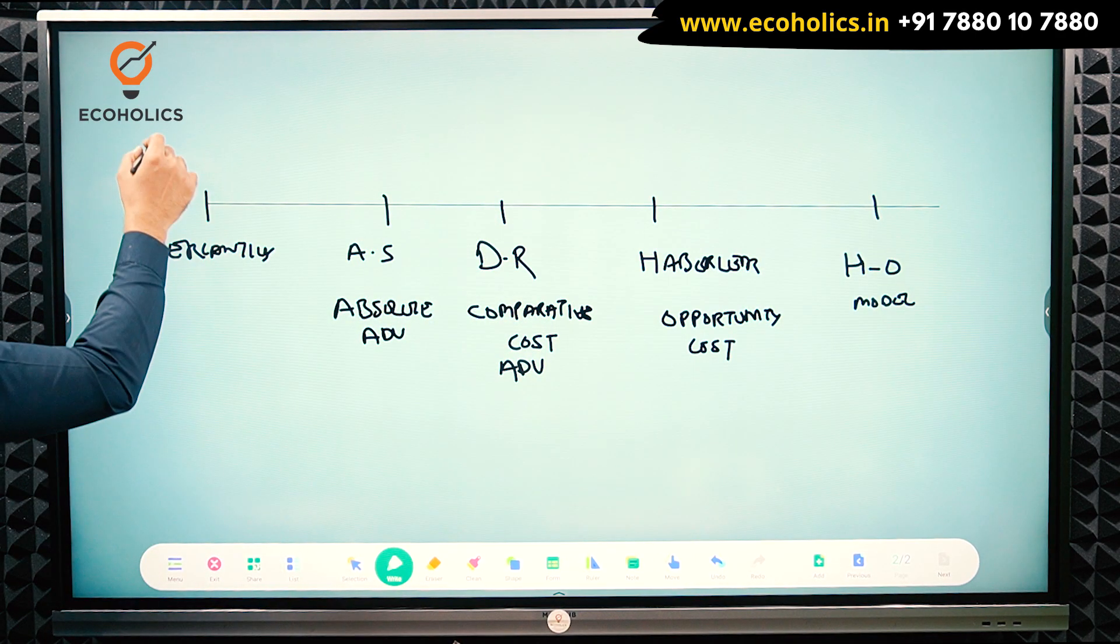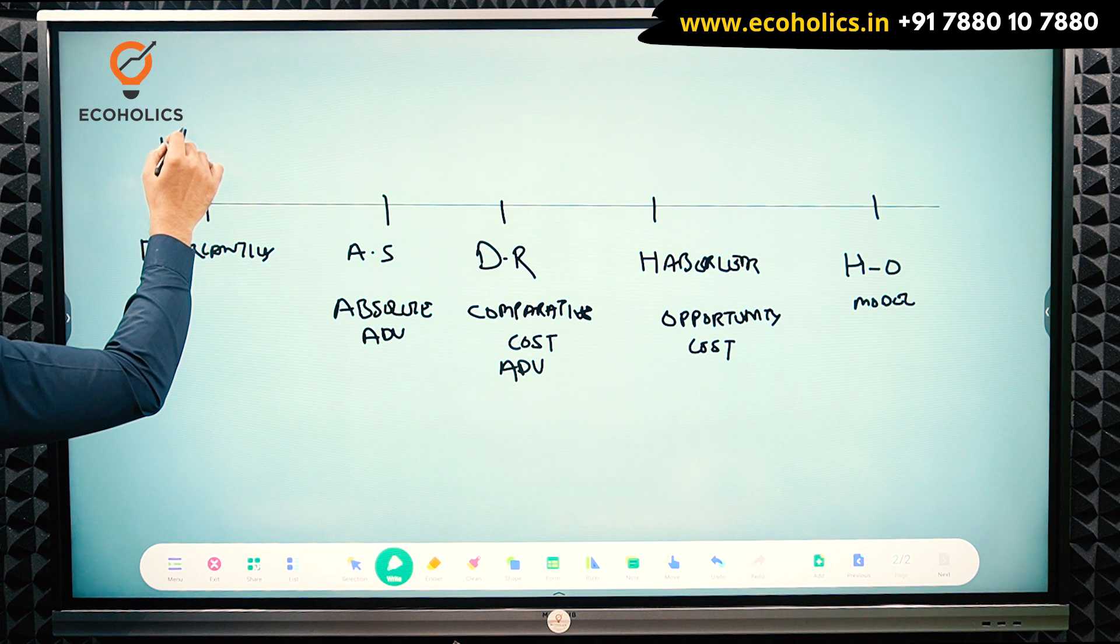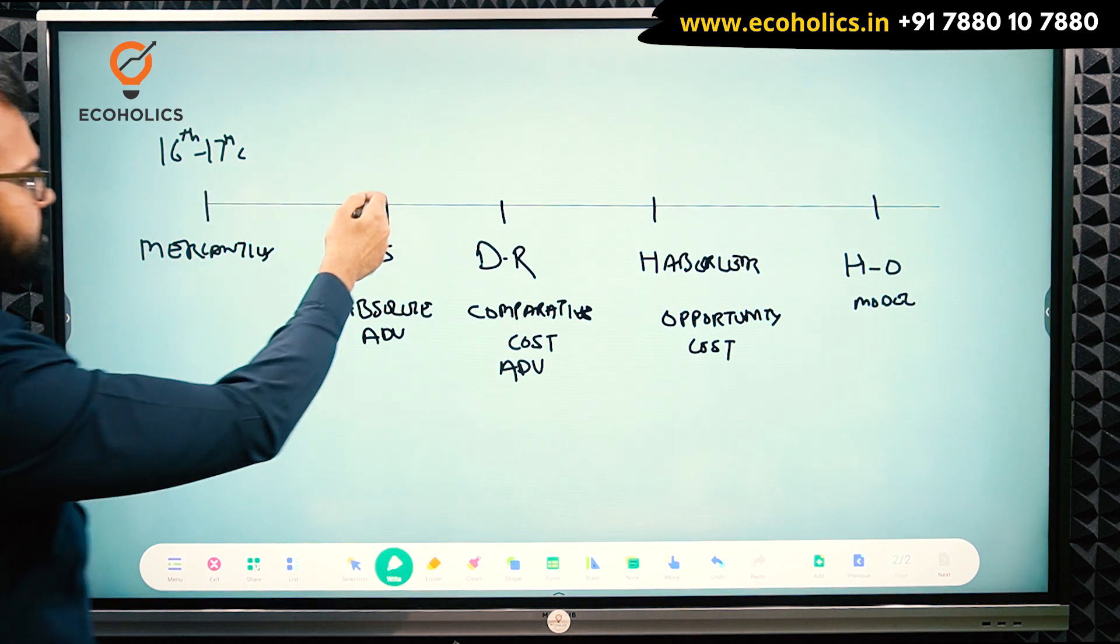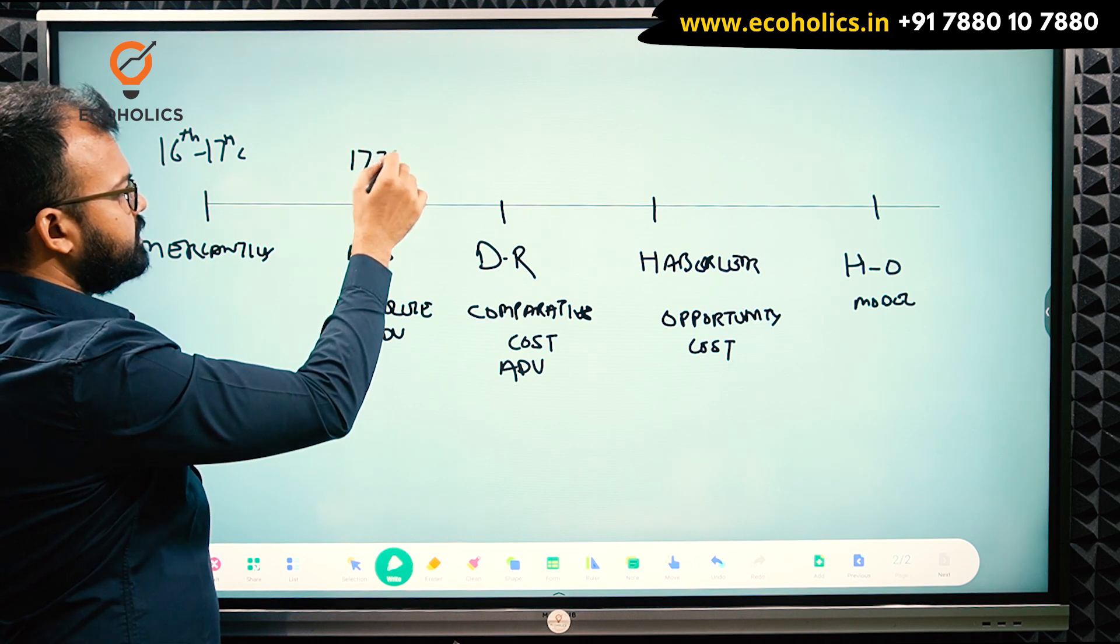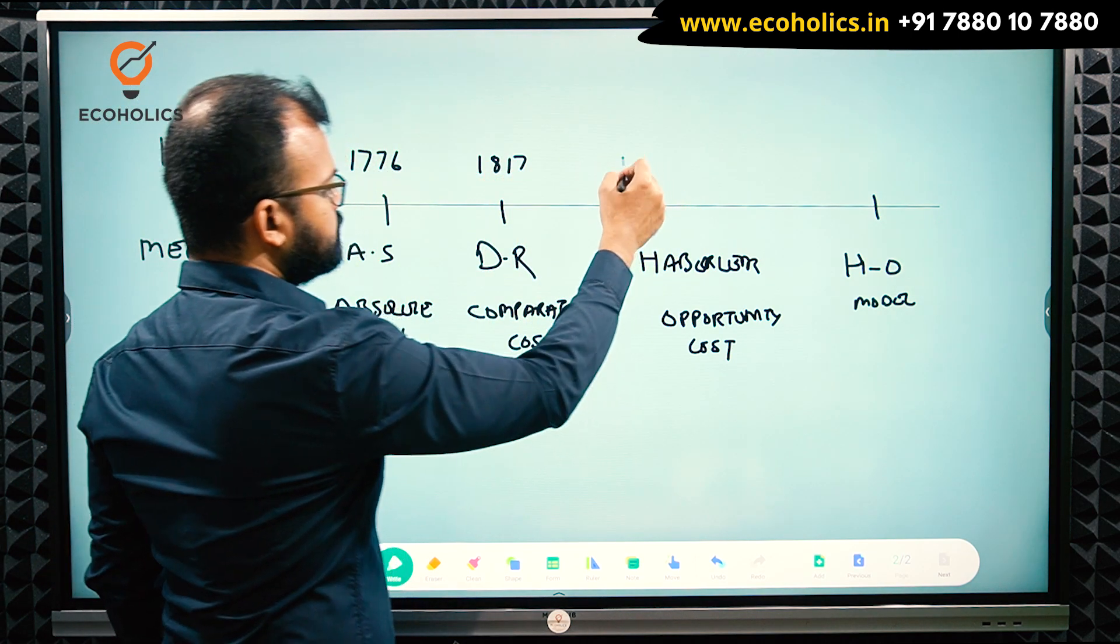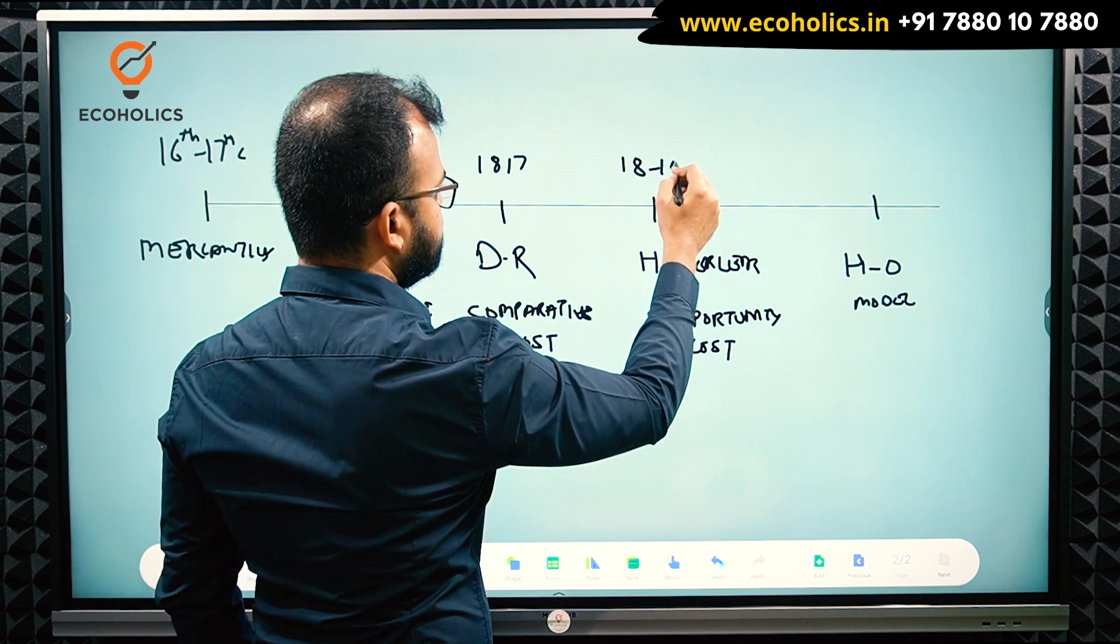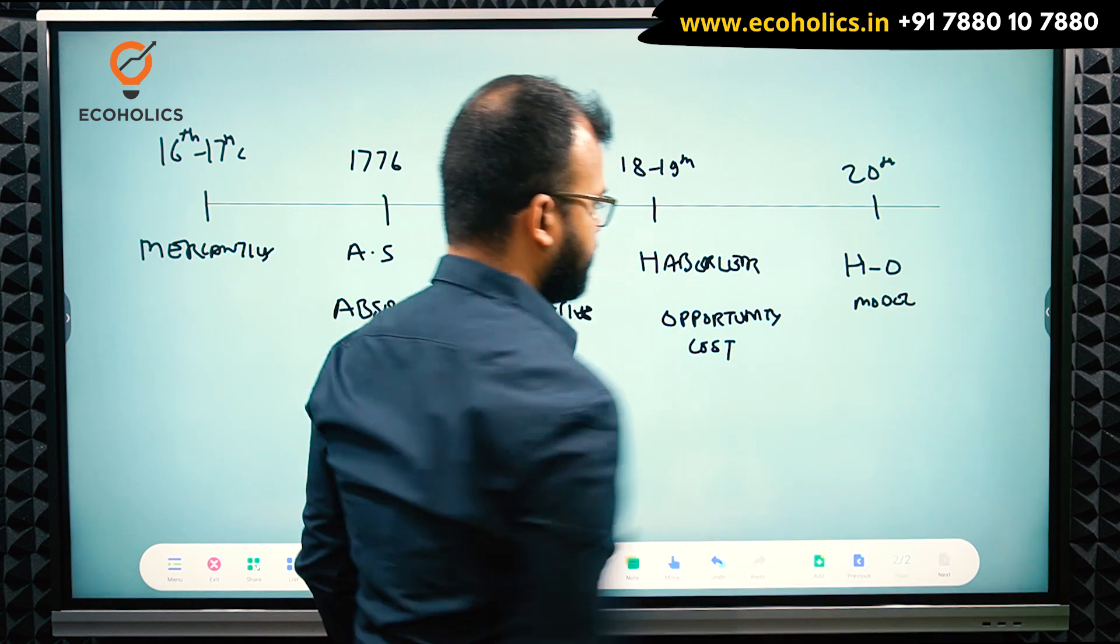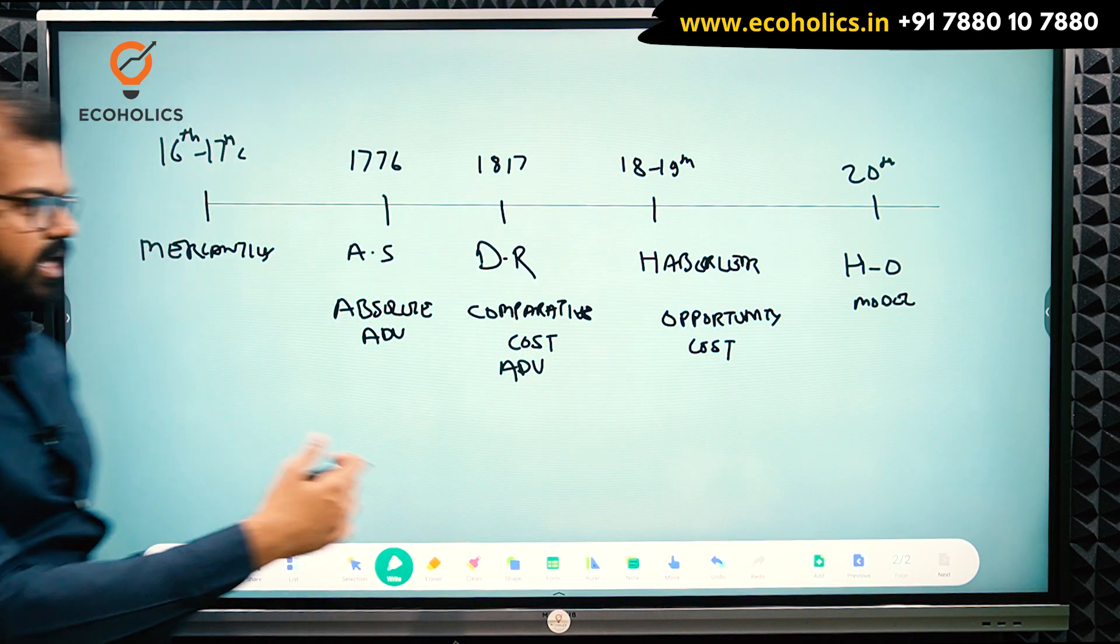Till this point, this is the 16th or 17th century. Adam Smith is around 1776, where he wrote the book. This is like 1870. Haberler is also in the 18th, 19th century. Heckscher-Ohlin, I told you, is 20th century: 1919 and 1933. This is the timeline if you understand.